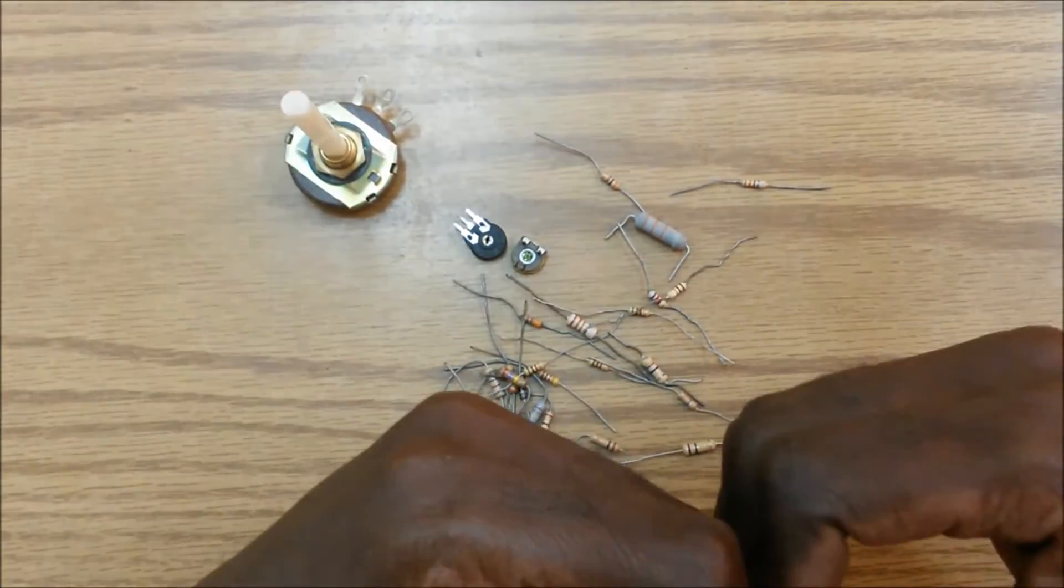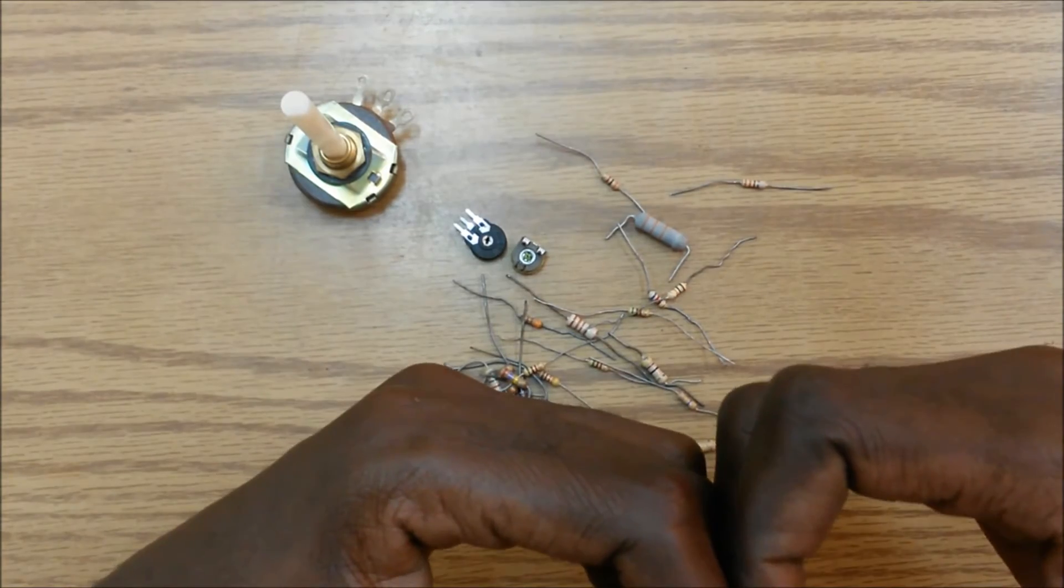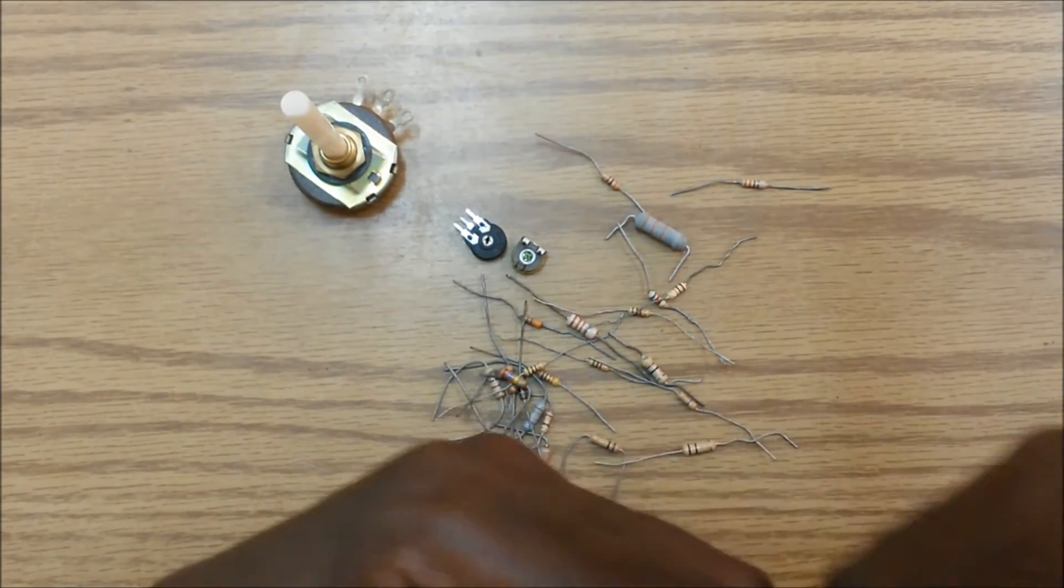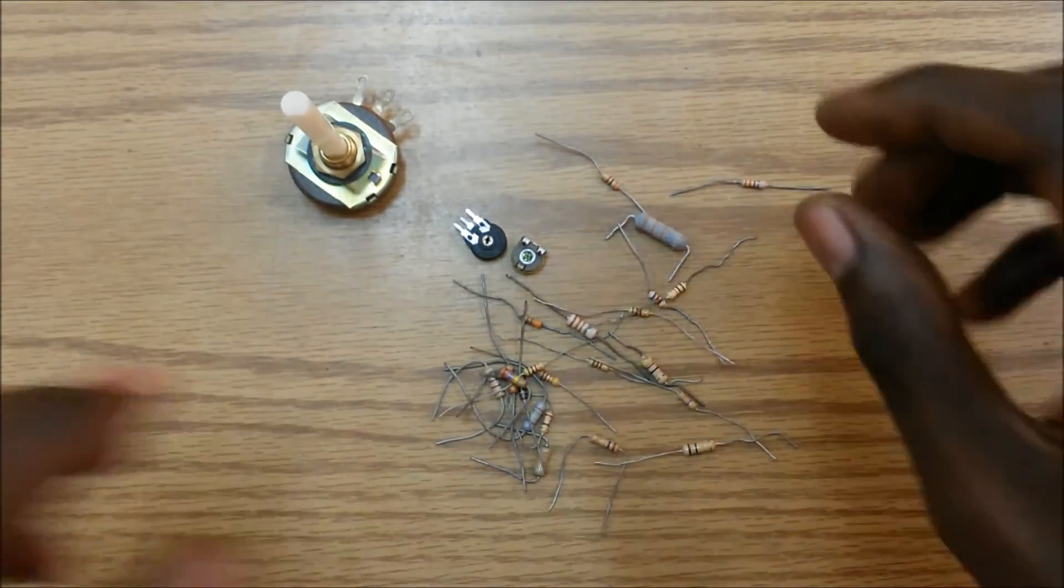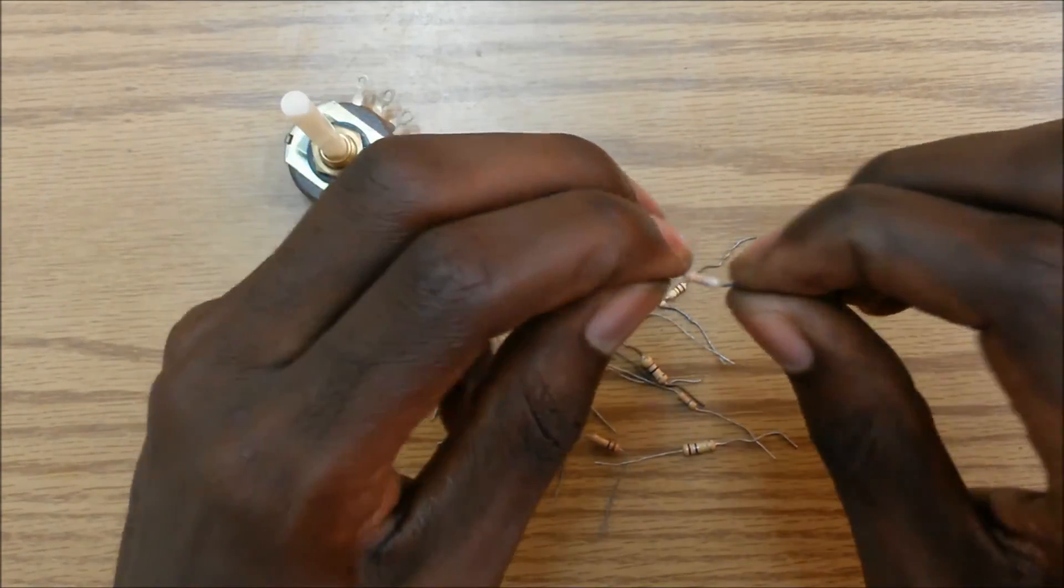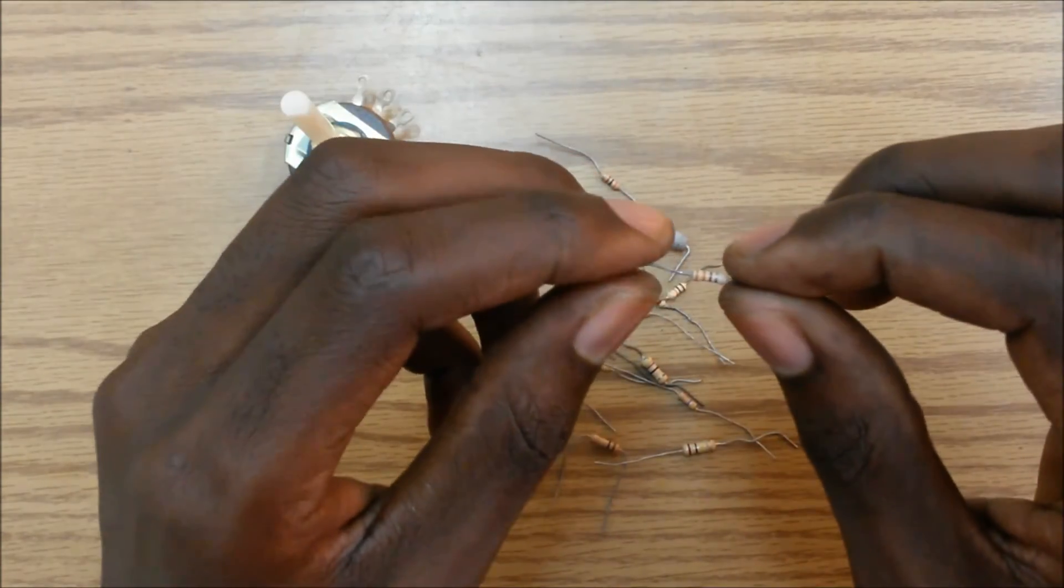So those are the two things we need to consider when we are choosing resistors to put in a circuit. Now in order to measure a resistor, we can actually look at the color bands and take reference to our resistor color code chart to determine the resistance of the resistor.